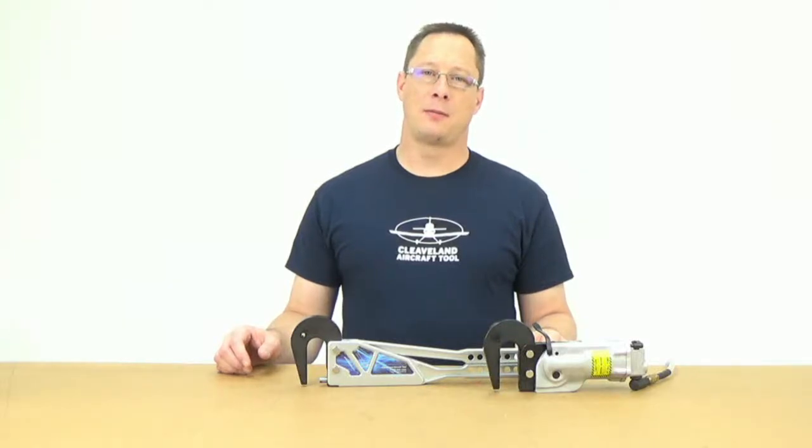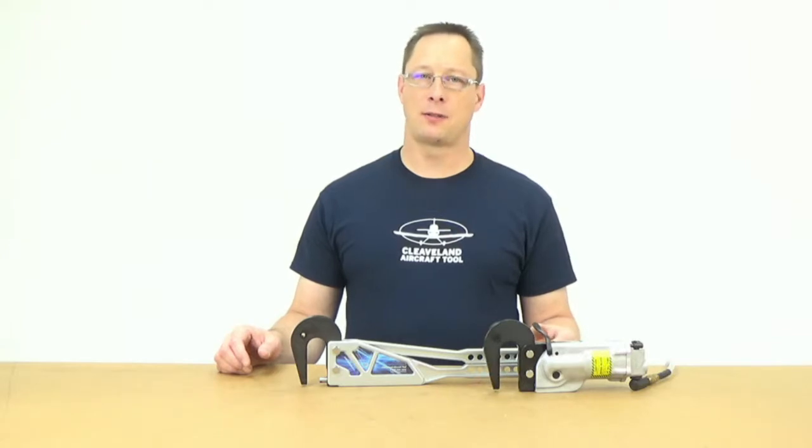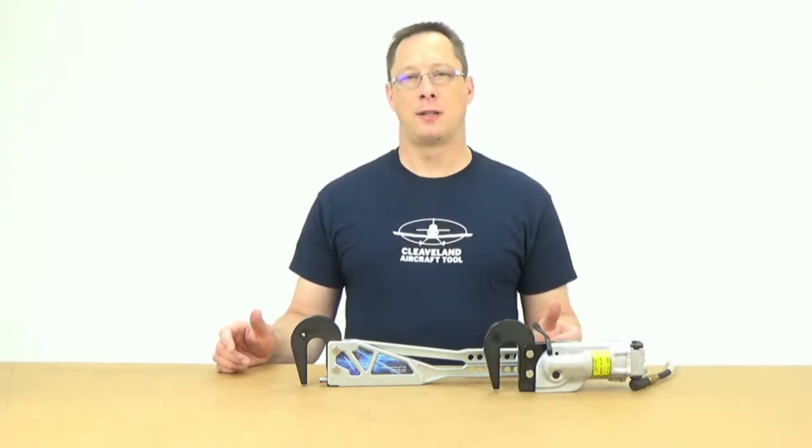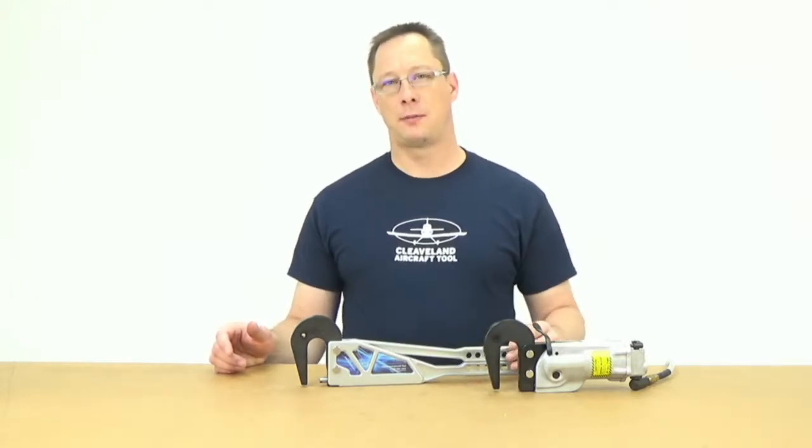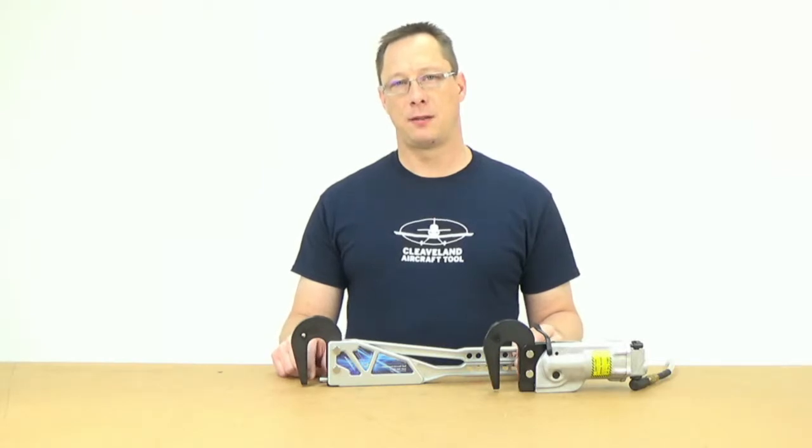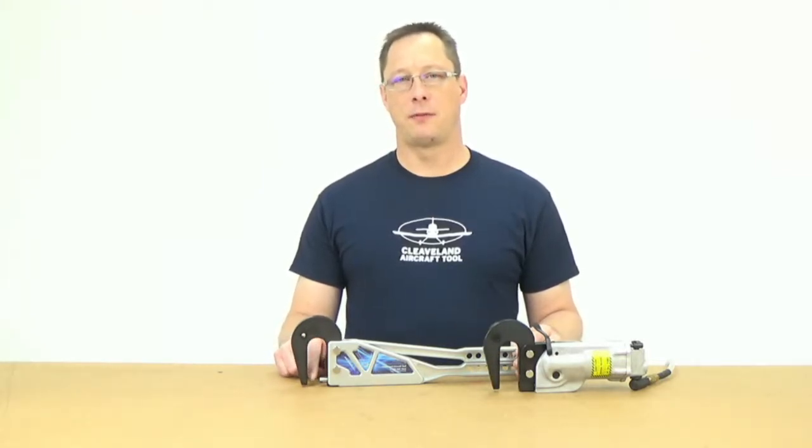The next big choice in putting together a toolkit is your rivet squeezer, your hand squeezer or pneumatic squeezer. As the name implies, the hand squeezer operates by hand using a handle to apply pressure to the dimpled dies to make the dimpled impression in the skins and also to set some of the rivets.